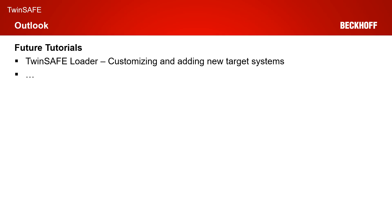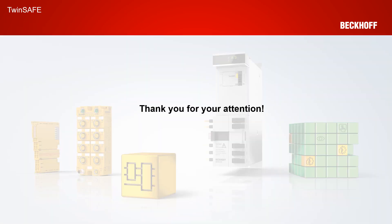In the next tutorial, we show you how you can customize the now-downloaded safety project — specifically how to use the TwinSAFE Loader to deactivate our TwinSAFE group. We also show you how you can add additional target systems. In the current released version P7, only a set of target systems is supported; for example, the AX8000 is not supported yet. So in the next tutorial, we show you how to add the AX8000 as an additional target system. Thank you very much for your attention — I hope to see you in the next tutorial.